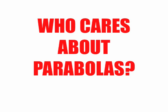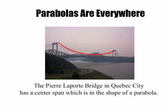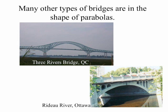Who cares about parabolas? Parabolas are pretty much everywhere. For example, the LaPierre Bridge in Quebec City has a center span which is in the shape of a parabola. Many other types of bridges are in the shapes of parabolas. Here we have Three Rivers Bridge in Quebec City, and we have the Rideau River here in Ottawa.